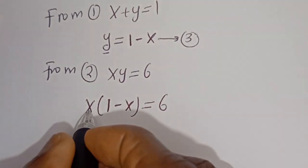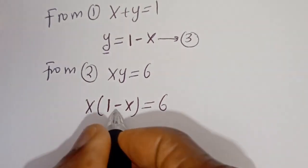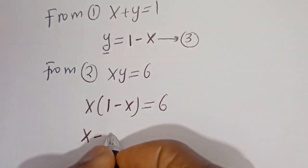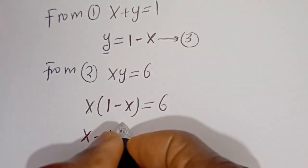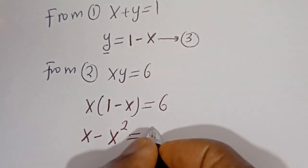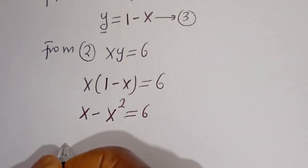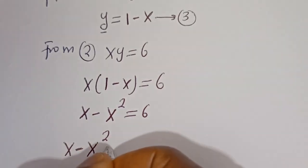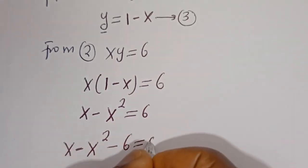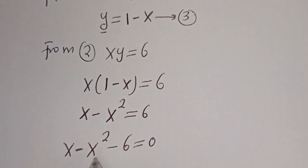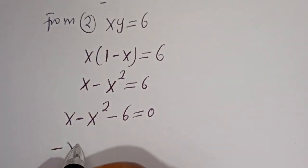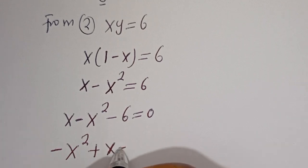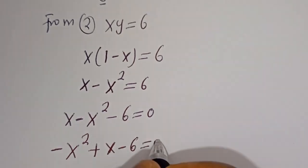Let's open the bracket: 1 times x is x, minus x times x is x squared, giving x minus x squared is equal to 6. Then we have x minus x squared minus 6 is equal to 0. Let's put this in standard form: minus x squared plus x minus 6 is equal to 0.